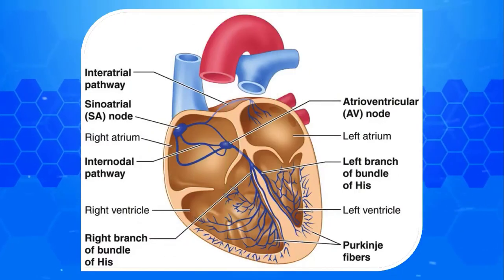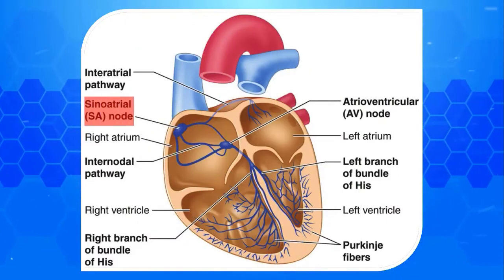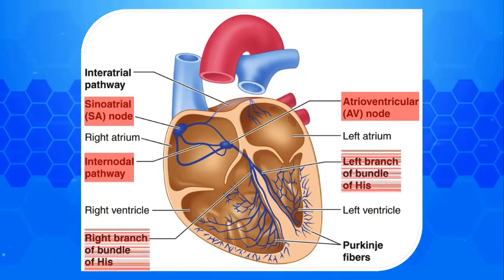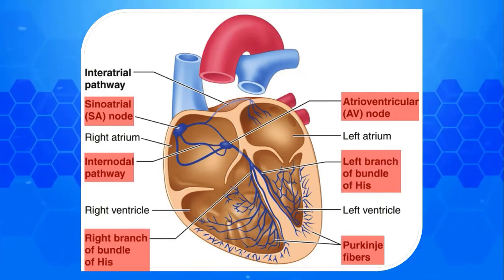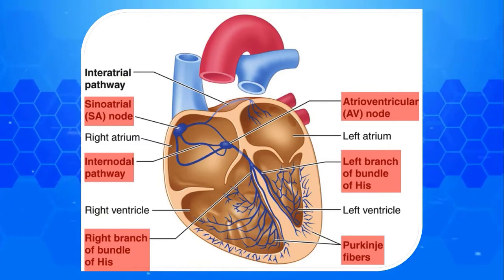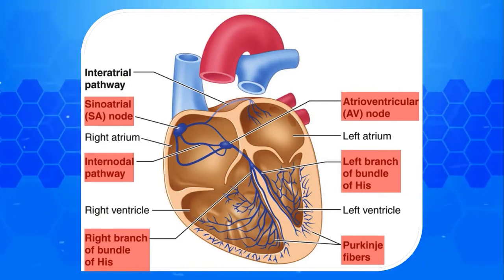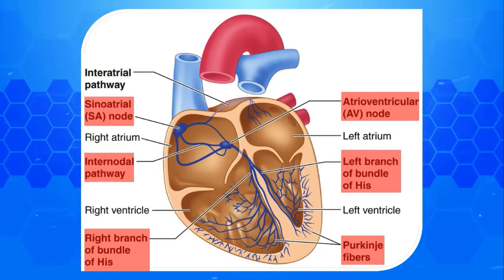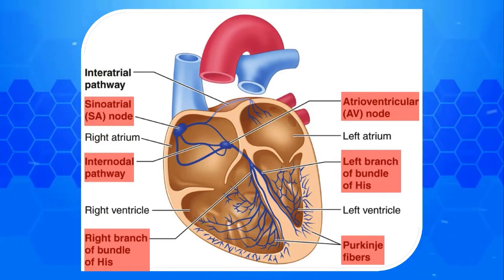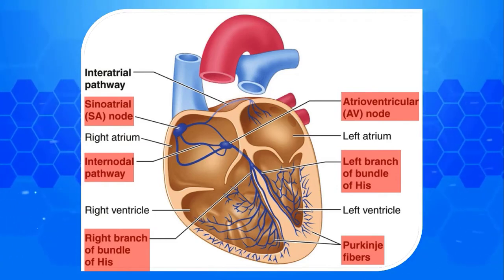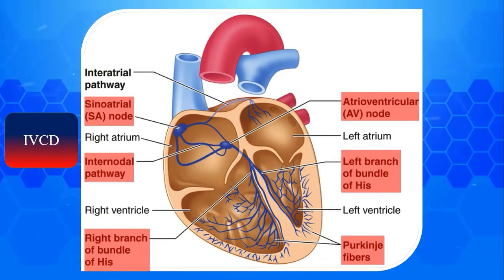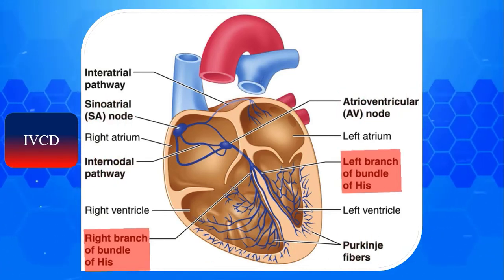In this video we will explain left bundle branch block in detail. Every heart has an electrical system that contains SA node, internodal fibers, AV node, bundle of His, right and left bundle branches, and finally the Purkinje system. Normal activation of the ventricles depends on proper function of bundle branches, occurring when electrical impulses reach both right and left ventricle via bundle branches. An intraventricular conduction delay or IVCD is either a complete or partial interruption of the electrical pathways inside the wall of the heart between two ventricles.